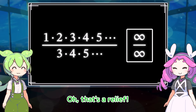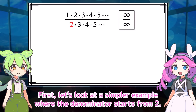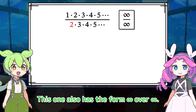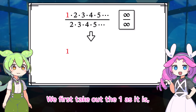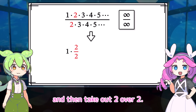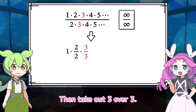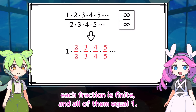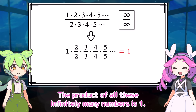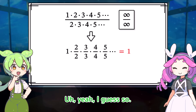That's a relief. First, let's look at a simpler example where the denominator starts from 2. This one also has the form infinity over infinity. Let's rewrite this expression so we can calculate it. We first take out 1 as it is, then 2 over 2, then 3 over 3. If we keep doing this infinitely, each fraction is finite and all of them equal 1. The product of all these infinitely many numbers is 1.